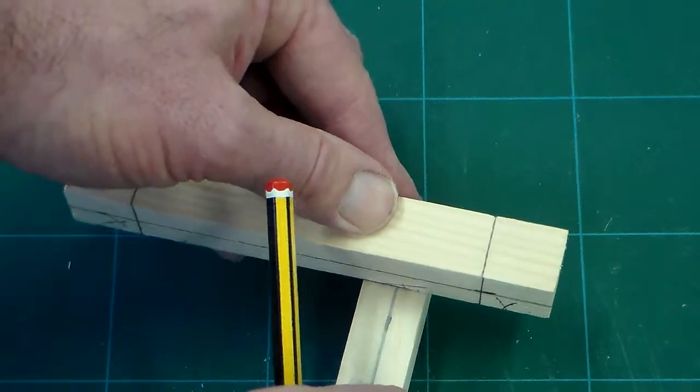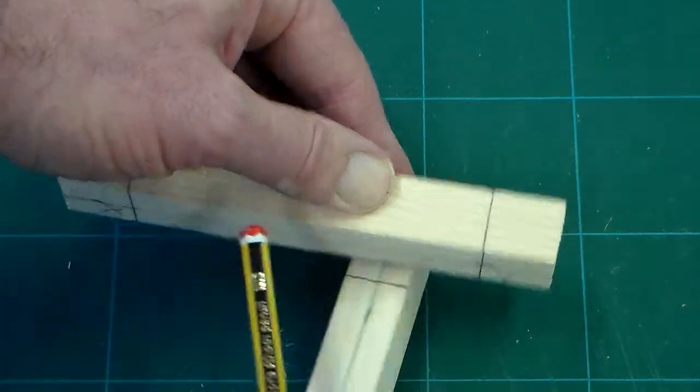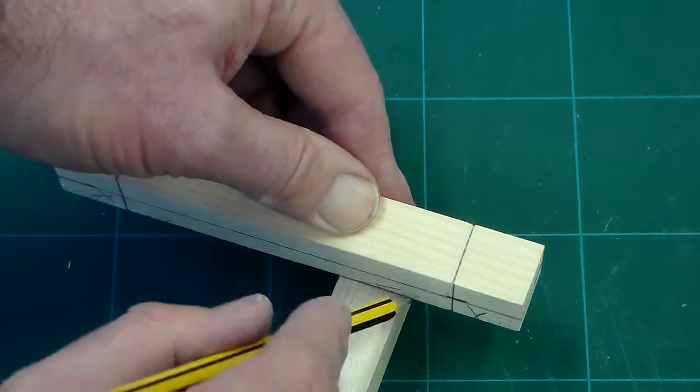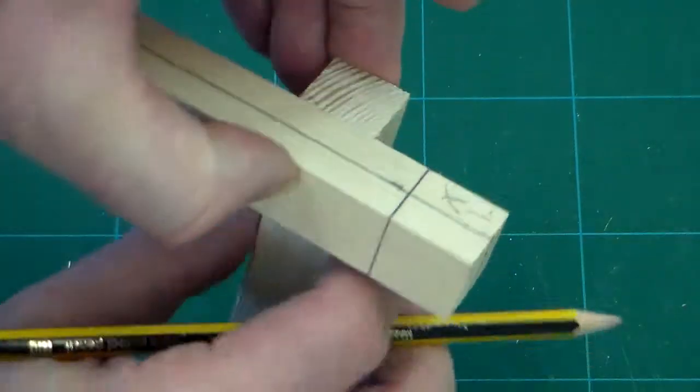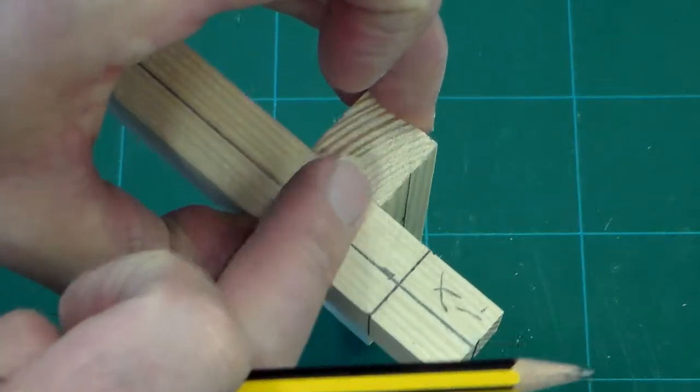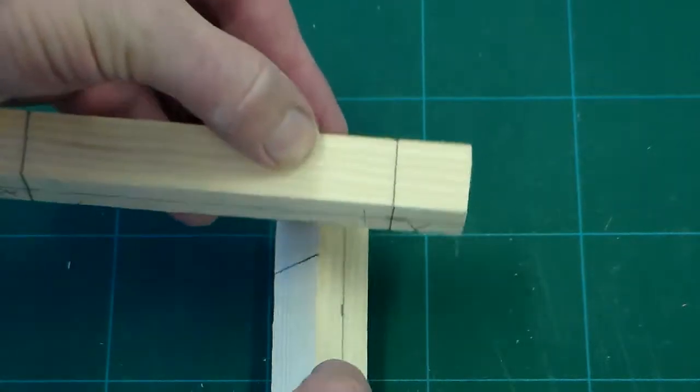Then take the other end of the wood and mark this in the same way, making sure all the time that these two surfaces are level, are flush.